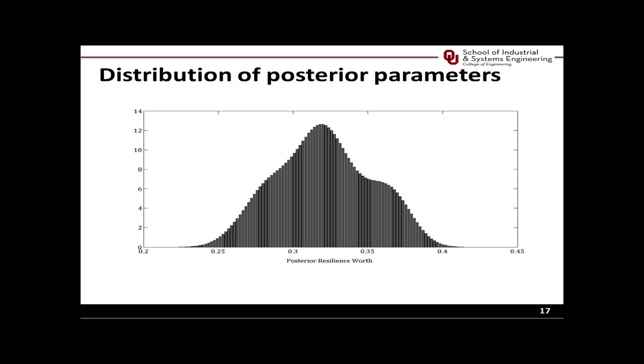The distribution is dispersed around the range of values going from approximately 0.25 to 0.4. The variability is mainly due to the data set being small. The median of the distribution reflects the actual number of positive classifications originally in the data. Instead of looking at a 0 or 1 classification, risk managers can now assess this probabilistic outcome in order to determine the degree to which this component is impactful to the resilience of the entire system. All of this helps achieve a better and more accurate allocation of resources.